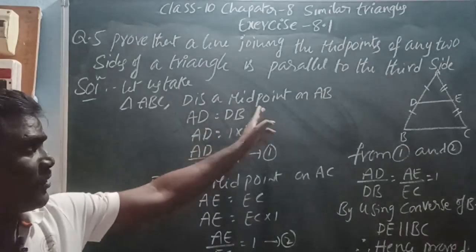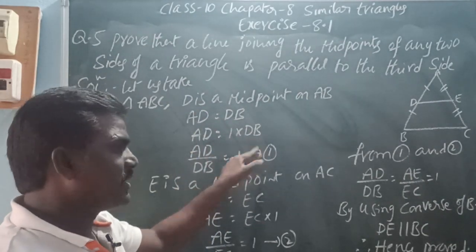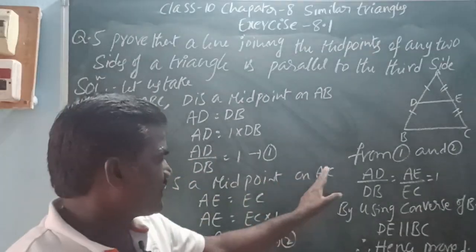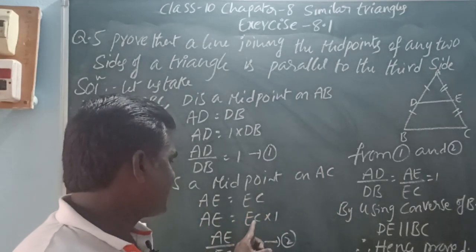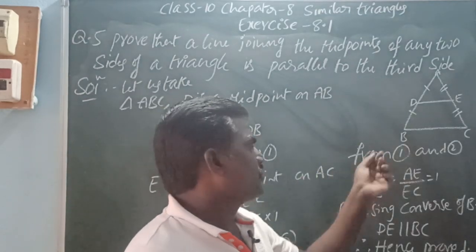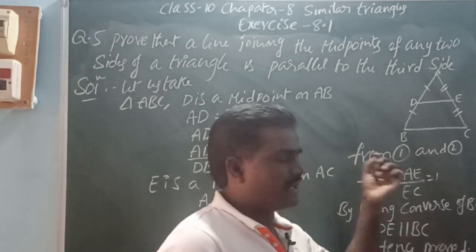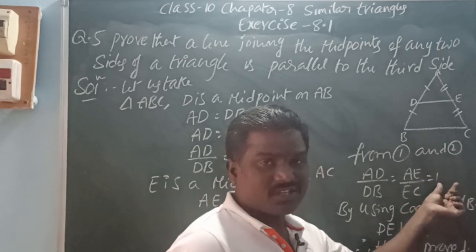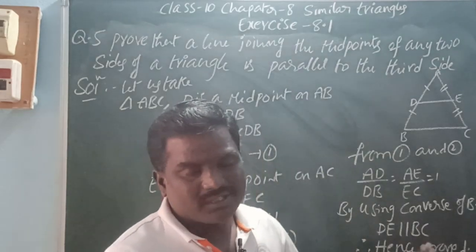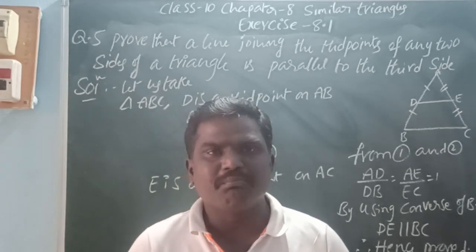Summary: D is a midpoint on AB so AD equals DB, giving AD/DB equals 1 (equation 1). E is a midpoint on AC so AE equals EC, giving AE/EC equals 1 (equation 2). From 1 and 2, AD/DB equals AE/EC equals 1. By using the converse of BPT, DE is parallel to BC. Hence proved. Thank you for watching my video. Please subscribe to our YouTube channel and click the bell icon. Thank you.